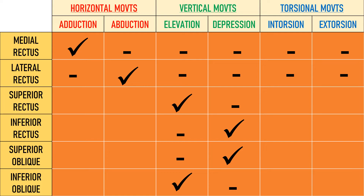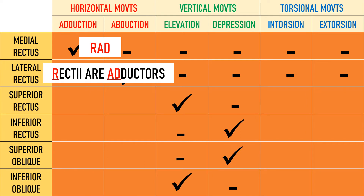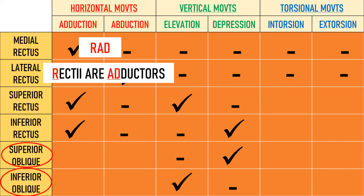Coming to horizontal eye movements, that is adduction and abduction. The word to remember here is RAD — R-A-D. Recti are adductors. So the two recti, superior rectus and inferior rectus, are adductors, and the remaining muscles that are not recti — the obliques, superior oblique and inferior oblique — are abductors.